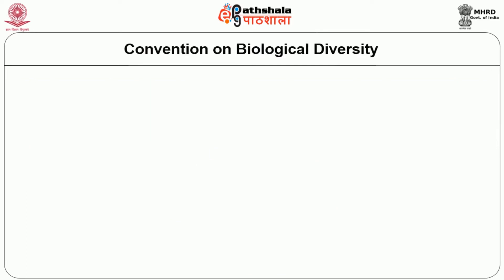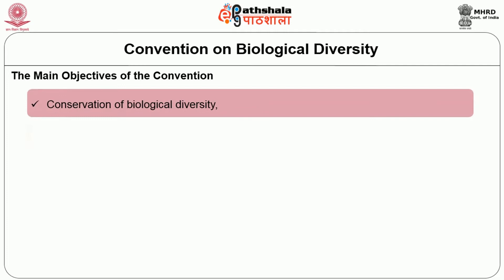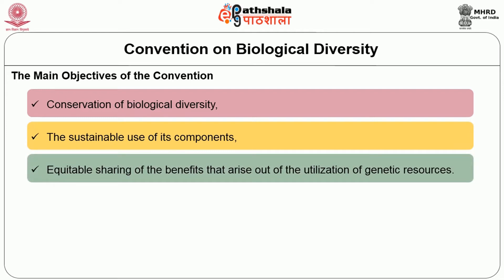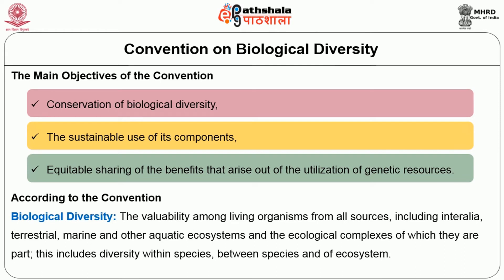The main objectives of the Convention on Biological Diversity include: conservation of biological diversity, the sustainable use of its components, and fair and equitable sharing of the benefits arising out of the utilization of genetic resources. According to the convention, biological diversity means the variability among living organisms from all sources including terrestrial, marine and other aquatic systems and the ecological complexes of which they are part. This includes diversity within species, between species, and of ecosystems.